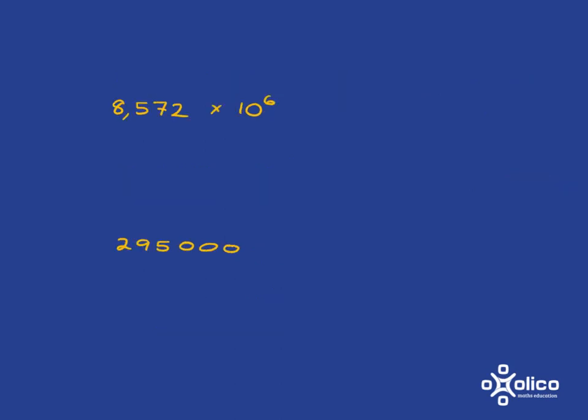Okay, let's look quickly how we would move from one form to the other. So, if we've got this form here, we have written it in scientific notation, we want to turn it into standard form.